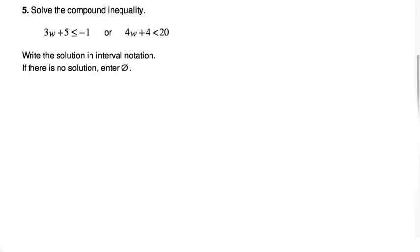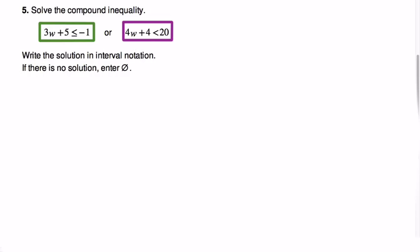Question number five asks you to solve not one inequality, but rather the result of combining two inequalities together into a compound inequality. The significance of that compounding cannot be understated — this is something that's very easy to gloss over mentally. We have the first inequality, 3w plus 5 is less than or equal to negative 1, and the second inequality, 4w plus 4 is less than 20, with this all-important connector — the logical word OR — in between them. Our solution has to contend with all three of those things.